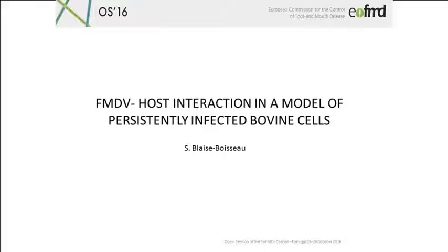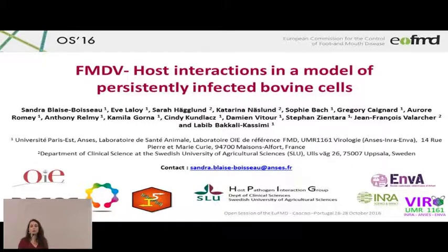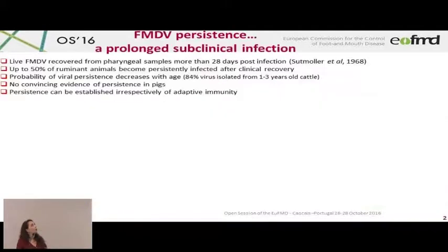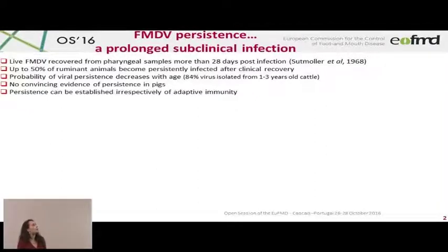Good morning ladies and gentlemen. I would like to thank the organizers for giving me the opportunity to talk about FMDV host interactions in a model of persistently infected bovine cells. A few words about FMDV persistence: it is a prolonged subclinical infection where live FMDV can be recovered from pharyngeal samples more than 28 days post infection. This is the original definition, though recent literature is moving and changing this definition. Up to 50 percent of ruminant animals become persistently infected after clinical recovery.